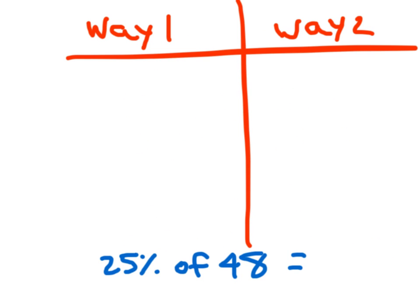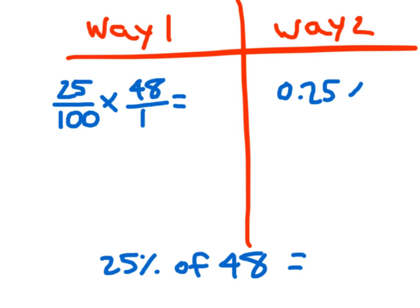Here's a review. We've got 25% of 48. There's two approaches. One way is to go ahead and write it as a fraction, and then to go ahead and multiply. 25 hundredths times 48, which I could write as 48 over 1. The other way is to go ahead and change 25% into a decimal, and then to multiply. So I've got 0.25 times 48.